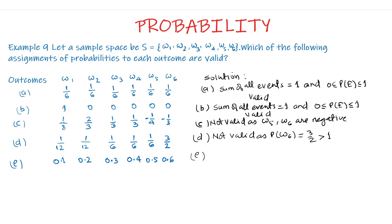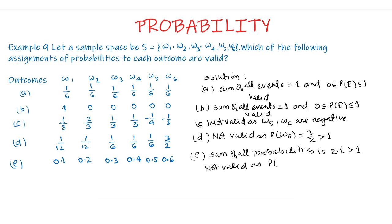For Part E, the given probabilities range from 0.1 to 0.6. The sum of all probabilities is 2.1, which is greater than 1. Since the probability of the total sample space must equal 1, and here it is 2.1, this assignment is not valid.